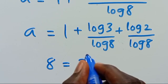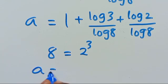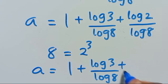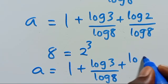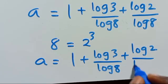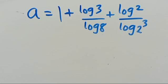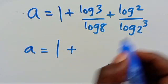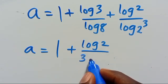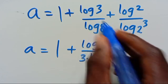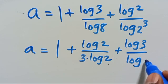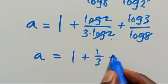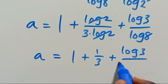Mind you, we can write 8 in base 2 as 2 to the power of 3. So we have a equals 1 plus log 3 divided by log 8, plus log 2 divided by log of 2 to the power of 3. The log of 2 to the power of 3 is 3 times log 2, so log 2 divided by 3 log 2 gives 1 divided by 3. Thus a equals 1 plus 1 divided by 3 plus log 3 divided by log 8.